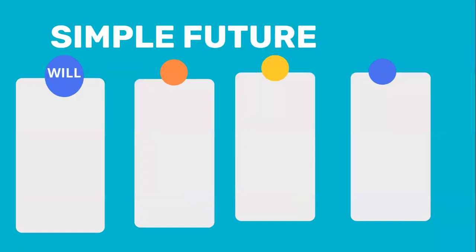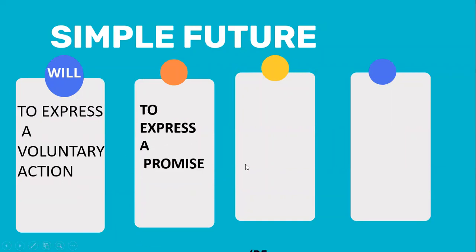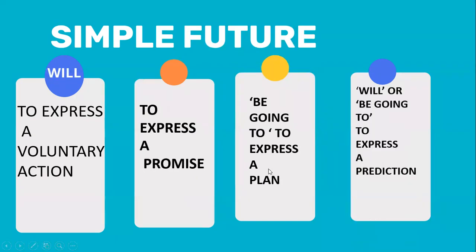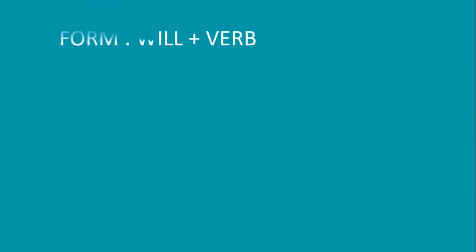When to make use of simple future? To express a voluntary action, to express a promise, to express a plan, to express a prediction. Simple future is used to refer to actions or events that will happen in the future. The sentence structure is: will plus verb.